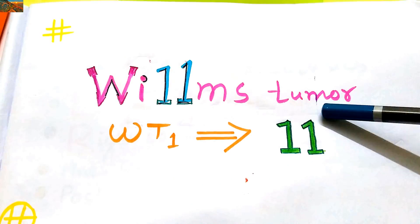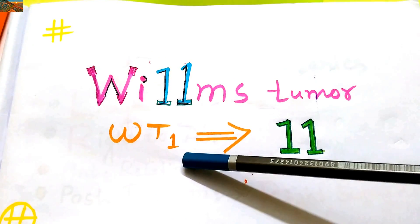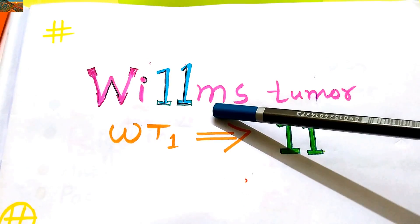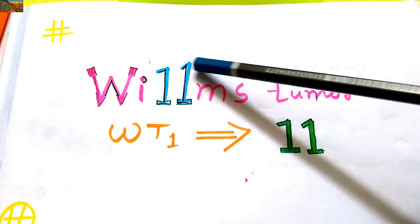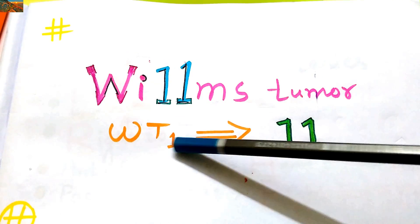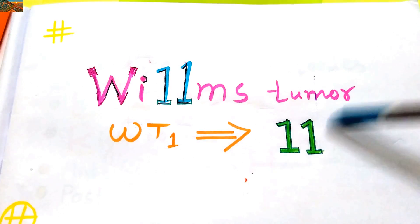Now it is Wilms tumor, that is WT1 gene. It is located on chromosome number 11. How do you remember? In the name Wilms, there is 11. Yes, the double L looks like 11. So the WT1 gene is located in chromosome number 11.